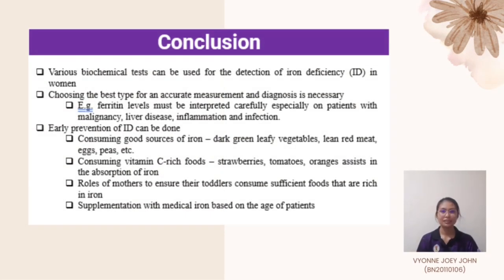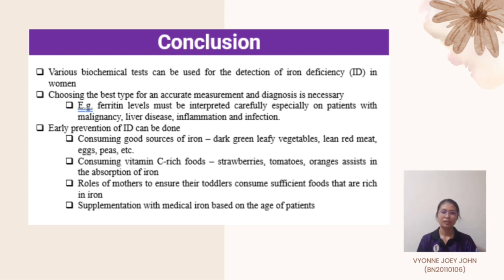In conclusion, there are various types of biochemical tests that can be done to identify people with iron deficiency, especially in women. It is important to choose the best type of biochemical test to obtain an accurate measurement and give the correct diagnosis, as some biochemical tests could give inaccurate measurements if not used carefully. For example, ferritin levels must be interpreted carefully, especially in patients with malignancy, liver disease, inflammation, and infection. Early prevention of iron deficiency is important so that people can be healthier.